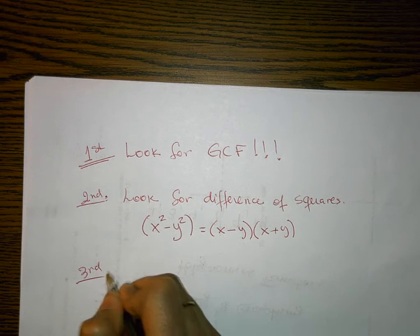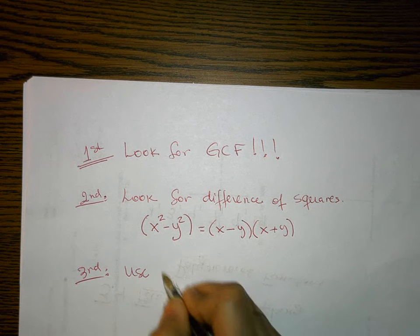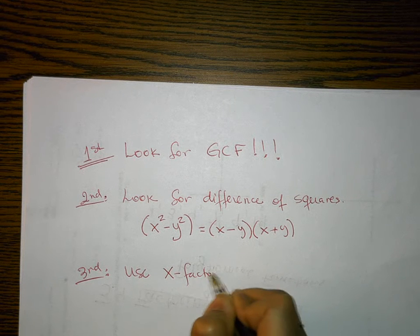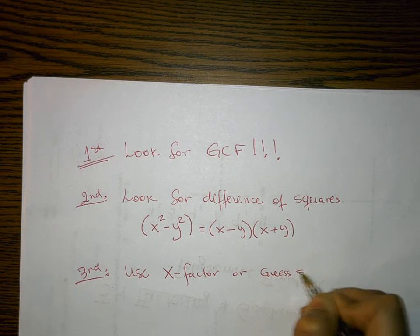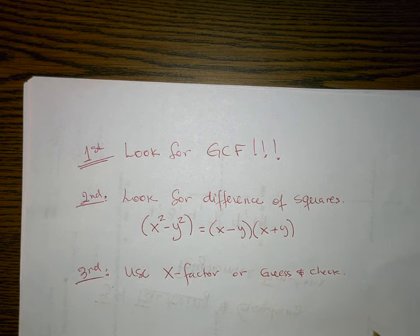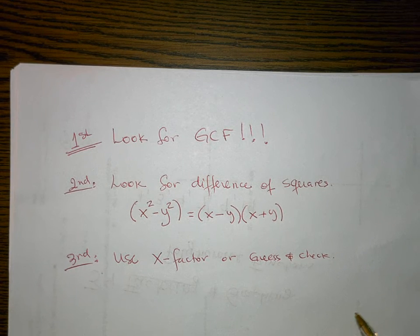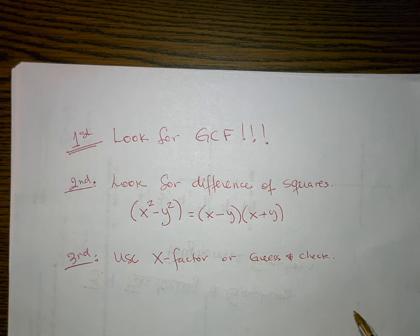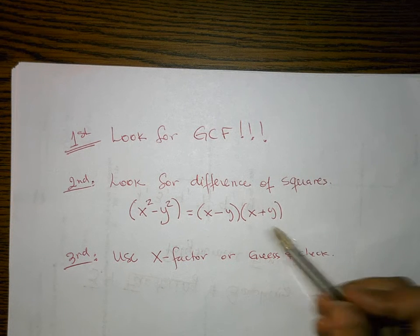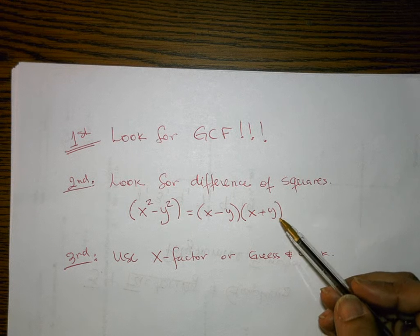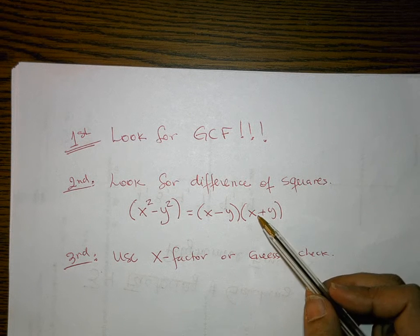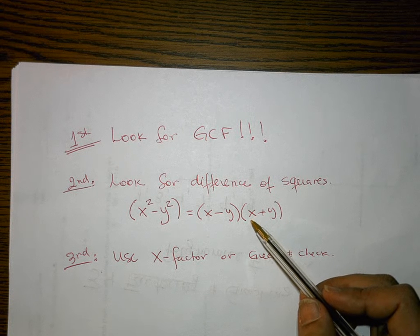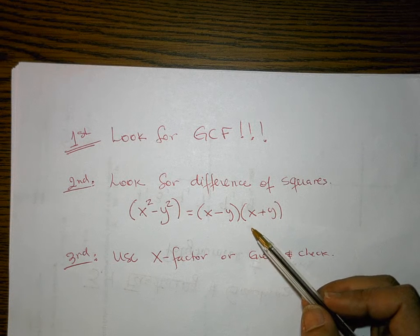You can use any method you want — the X-factor method or the guess-and-check. I really don't care which one you use. Always look for the GCF first, then decide on your method, and then always double-check: is there any difference of squares that allows you to factor further?